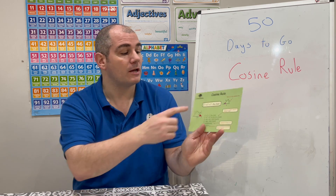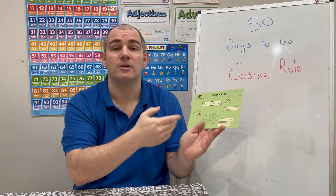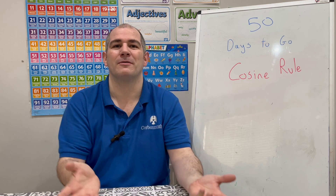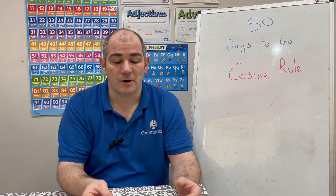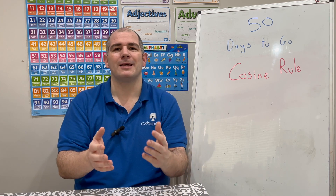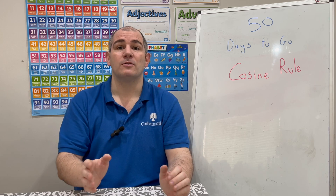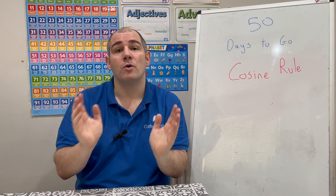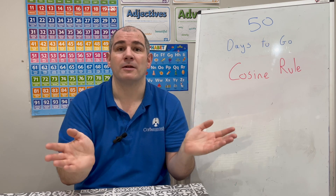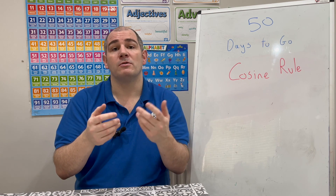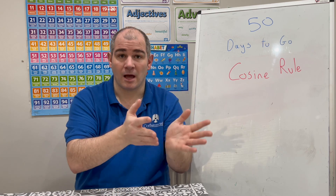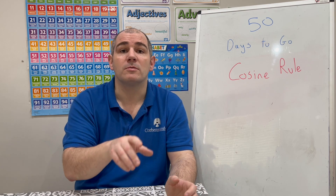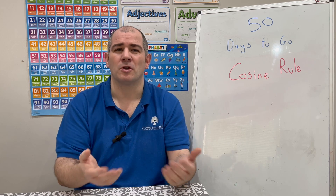So in today's video we've gone through the cosine rule: a squared equals b squared plus c squared minus 2bc cos A. It's given to you in the exam so you don't have to learn it off by heart, though if you're doing AS or A-level maths you'll likely learn it anyway. The more practice you do with the cosine rule the better — it's useful for finding a missing side when you have two sides and the included angle, or finding an angle when you know all three sides. There are practice questions linked in the description below.